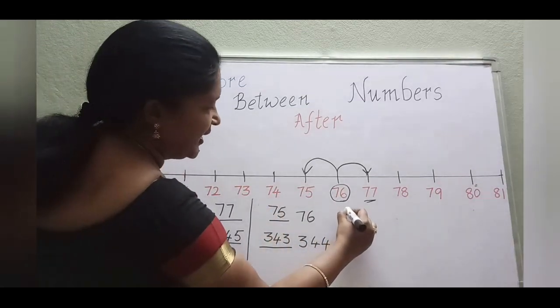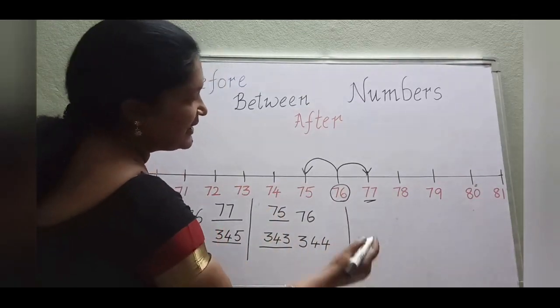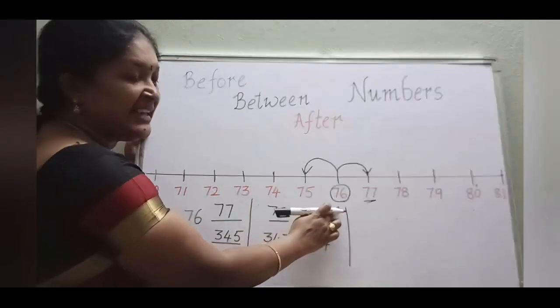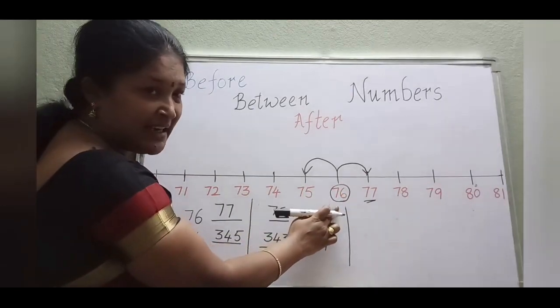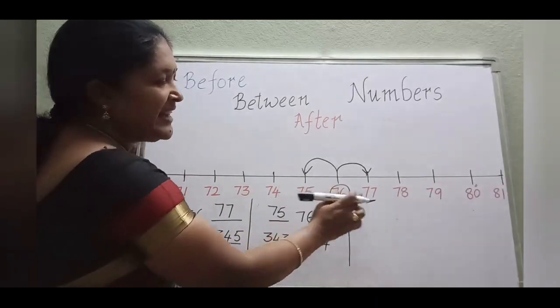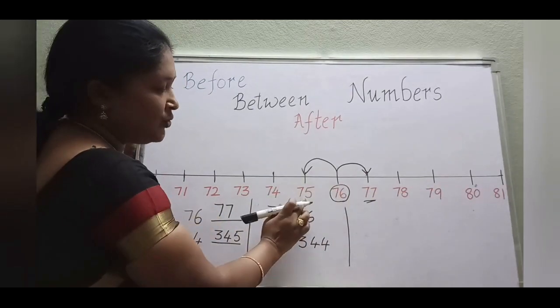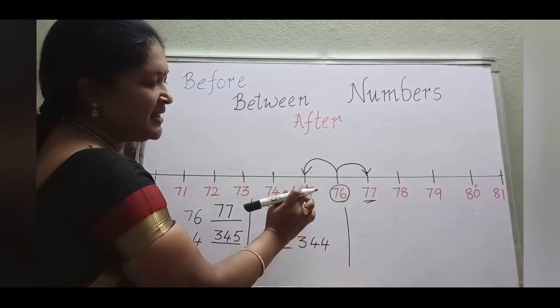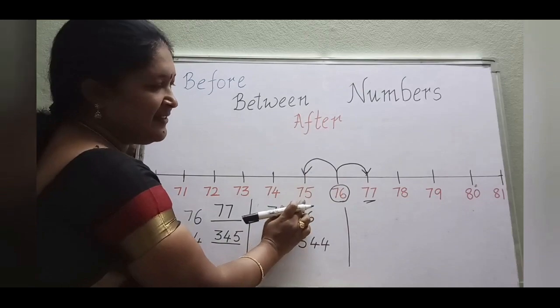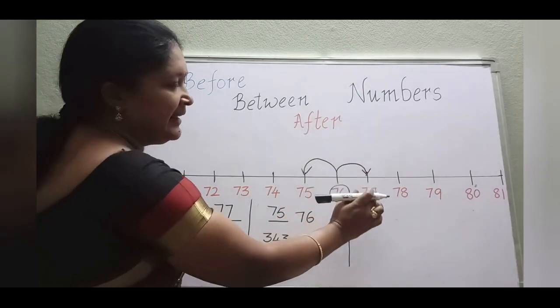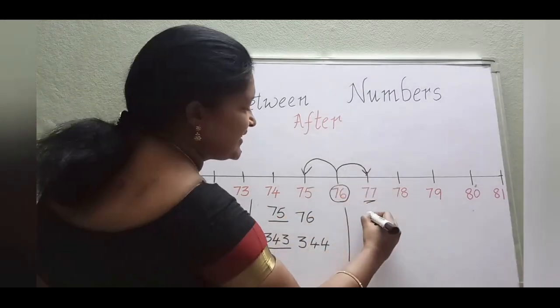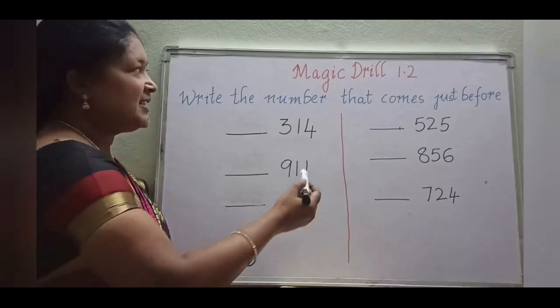So here, 76 — the number 76 is between two numbers. What are those numbers? 75 and 77.